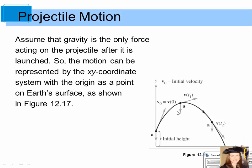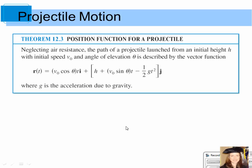The acceleration vectors are all pointing straight down — that's acceleration due to gravity. Acceleration due to gravity is constant, so no matter where you are on the path, that acceleration vector is the same. We can use a position function for projectile motion. Neglecting air resistance, the path of a projectile launched from initial height h, with initial speed v sub 0, and angle of elevation theta is described by a vector-valued function.